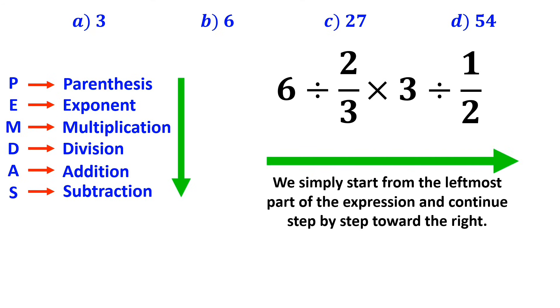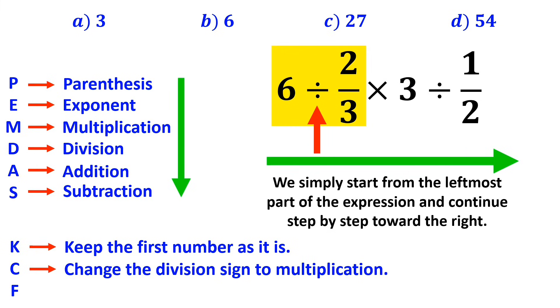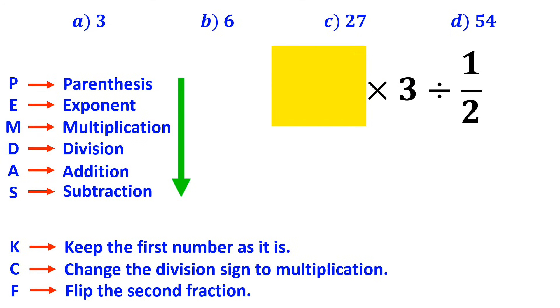It means that we begin with the expression 6 divided by 2 over 3, which I have marked in yellow. All right, whenever we come across a division sign between two terms, it's best to use the KCF rule. In this rule, K stands for keep the first number as it is, C stands for change the division sign to multiplication, and F stands for flip the second fraction. So we remove the highlighted part and replace it with 6 times 3 over 2.